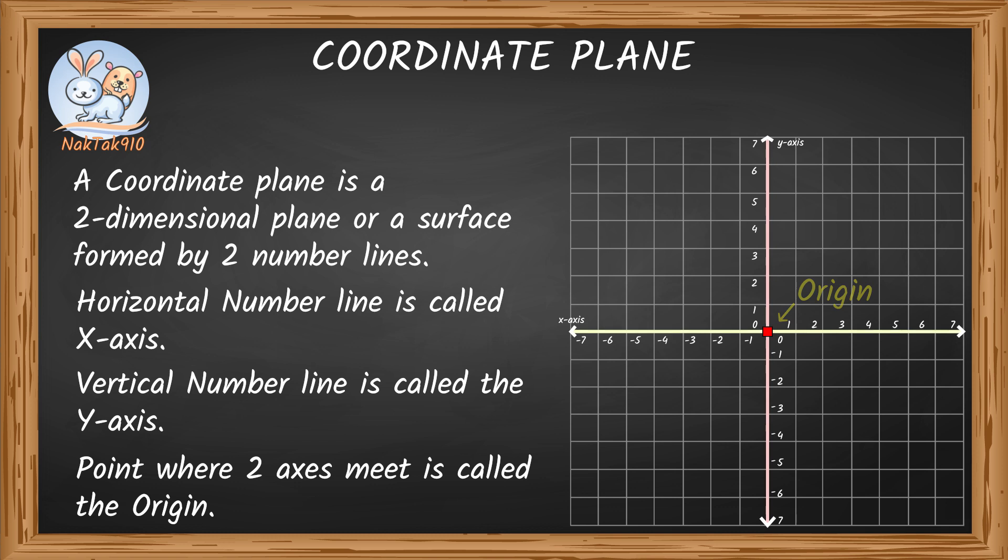There are four sections created with the intersection of both the axes. These four sections are called quadrants.